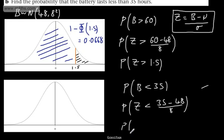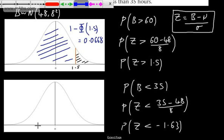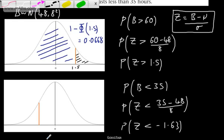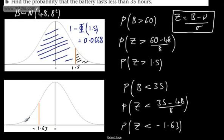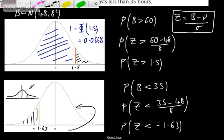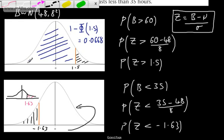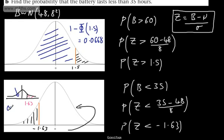So we want the probability that Z is less than negative 1.63. Drawing the standard normal curve with negative 1.63 marked, we use symmetry: the area to the left of negative 1.63 equals the area to the right of positive 1.63. That area is given by 1 minus Φ(1.63).